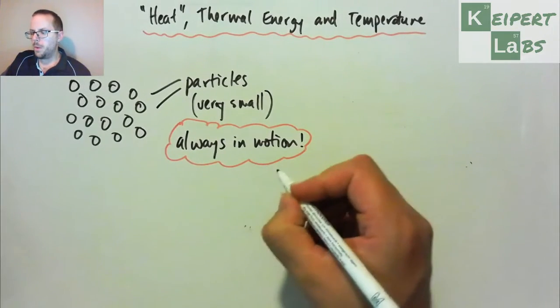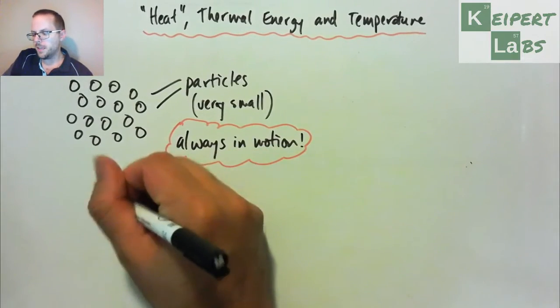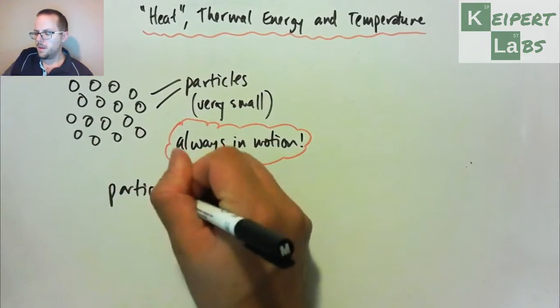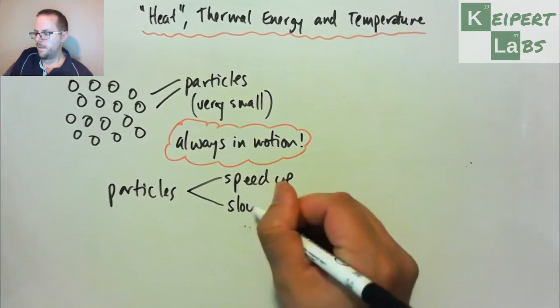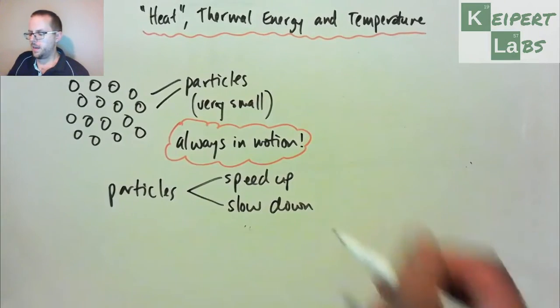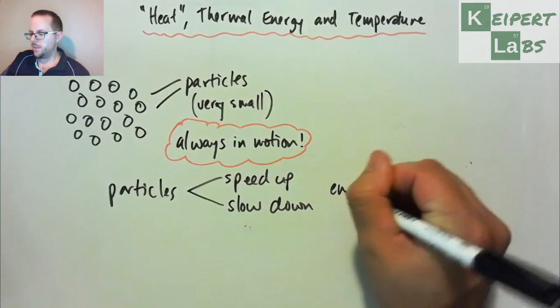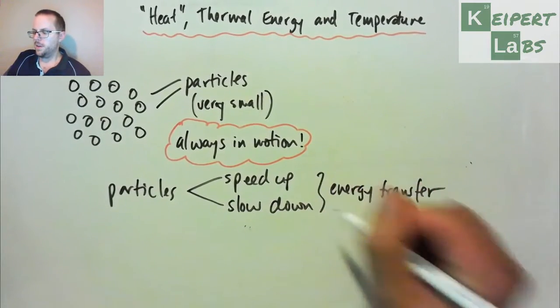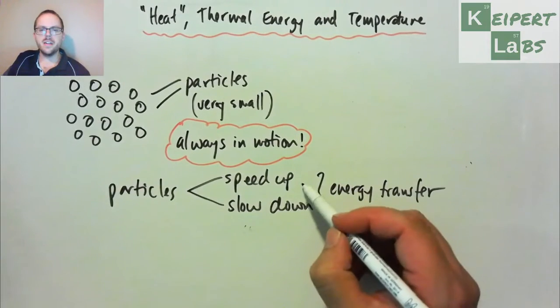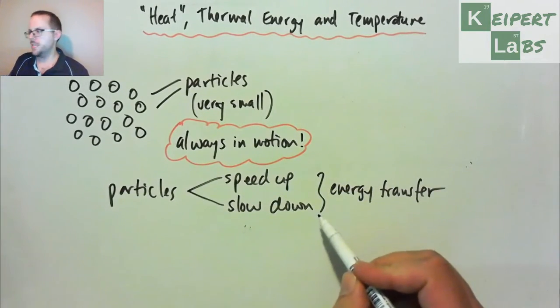What we know is that particles can speed up or they can slow down. The way that happens is through energy transferring. We can transfer energy into the particles to make them speed up, we can transfer it out to slow them down.